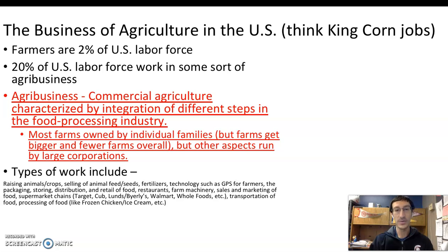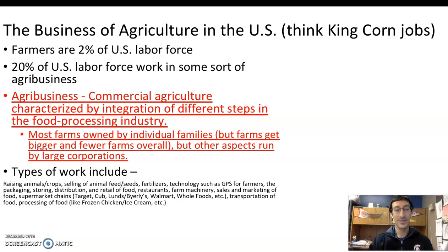Packaging, storing, distribution, and retail of food are also part of agribusiness. Meatpacking, processing, the actual cutting of meat — think butchers — as well as people involved in transportation of meat and the actual selling of it. So think of places like Lund's, Byerly's, Target, Aldi, Walmart. Marketing food and selling advertisements is another part of agribusiness. Restaurants are also a very large part of this — who do they contract with to get their food, how do they get it, and how often?